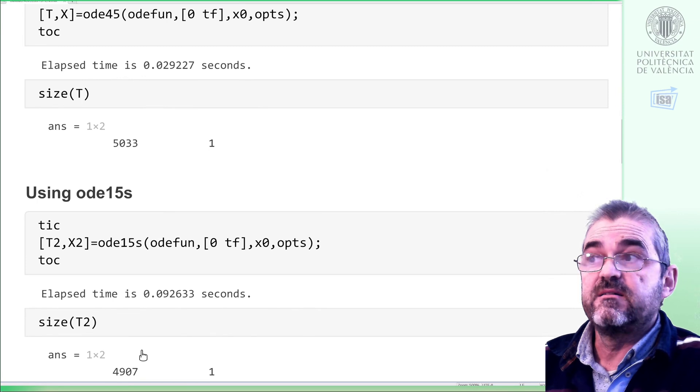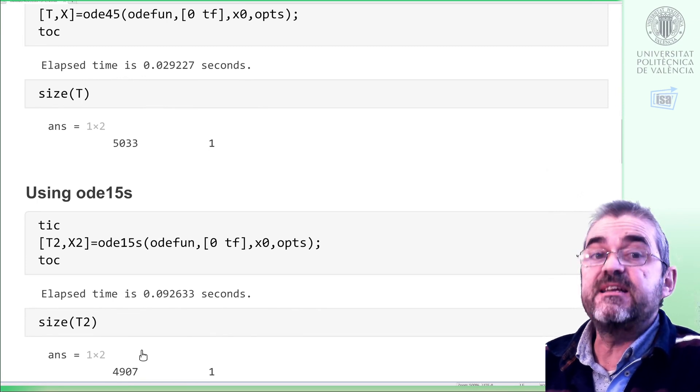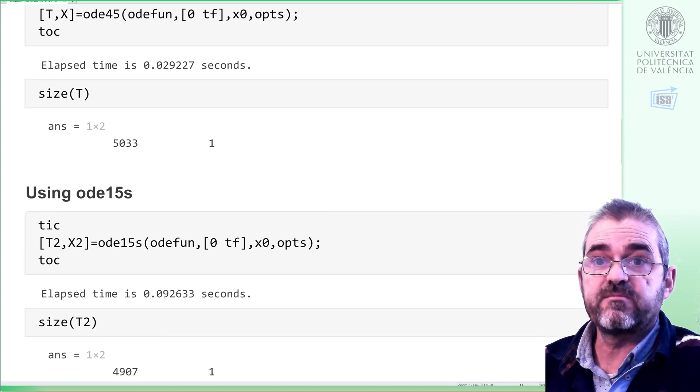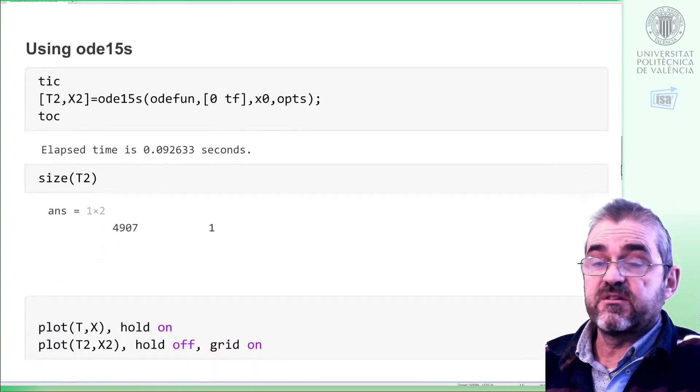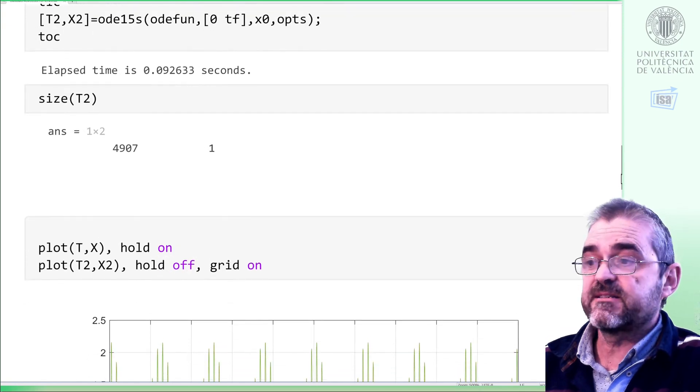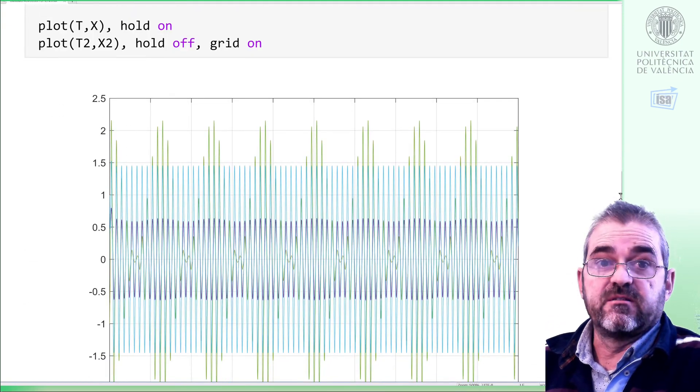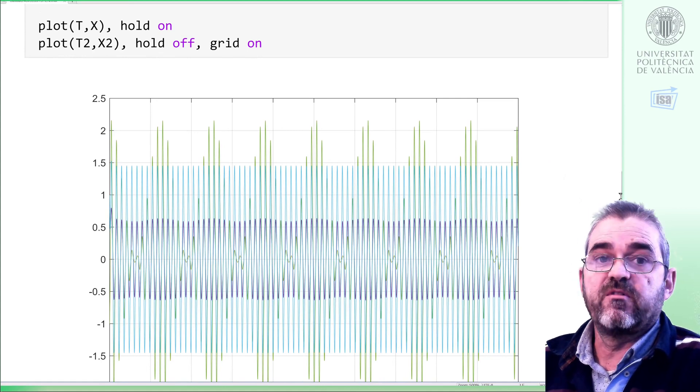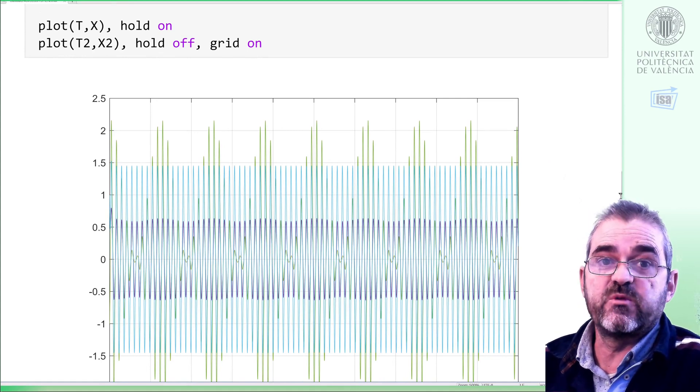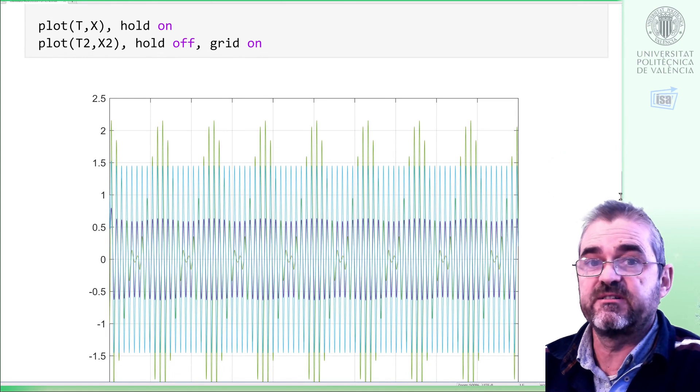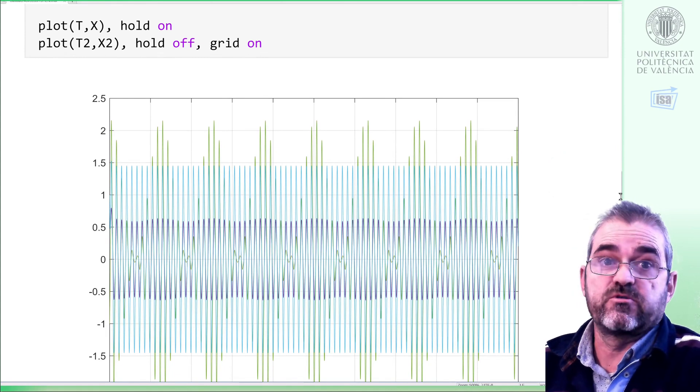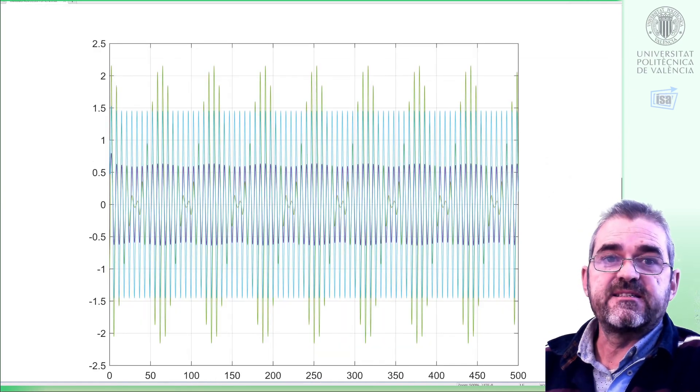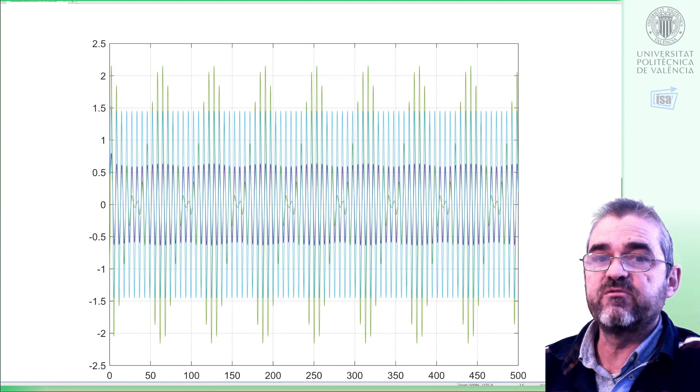This is why MATLAB recommends ODE45 for easy problems, non-stiff. Of course, the solvers computed a lot of points to meet the specified tolerance. And basically, the resulting solutions are identical. These are the three states of the process. And there is no visible difference between the solution by one solver and the solution by the other solver, because the tolerances were very small. So in this case, competition was won by ODE45.